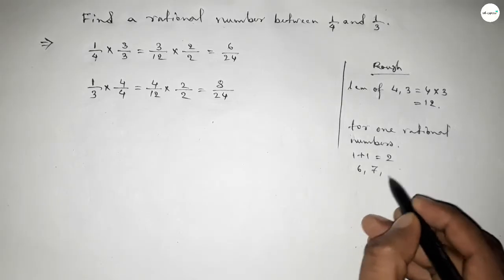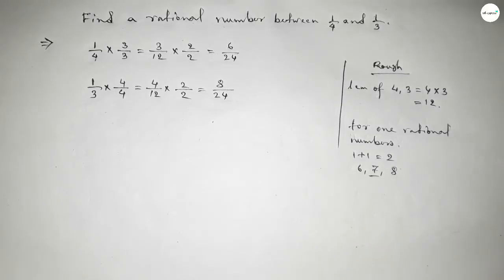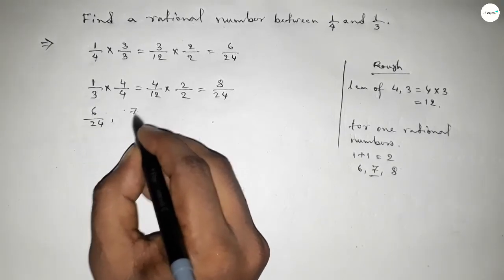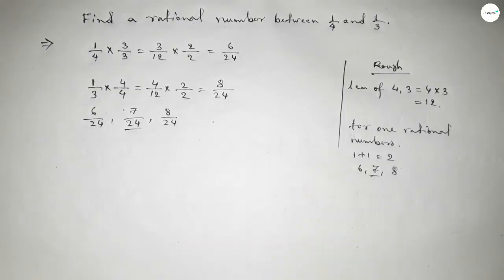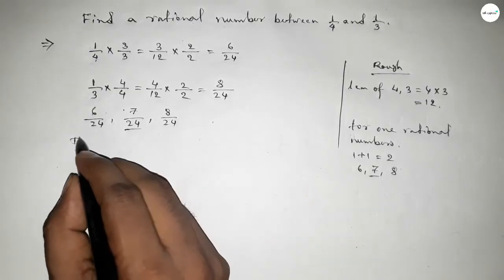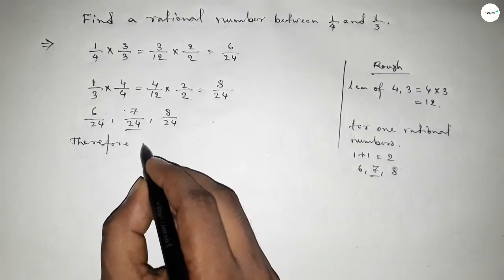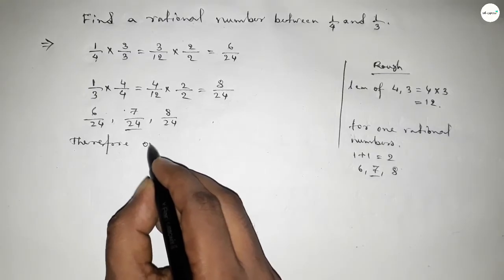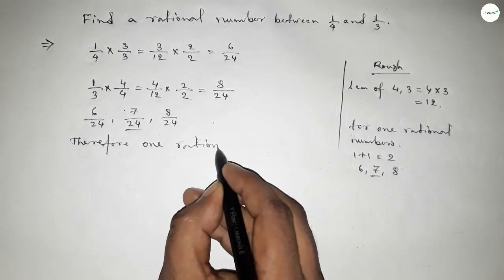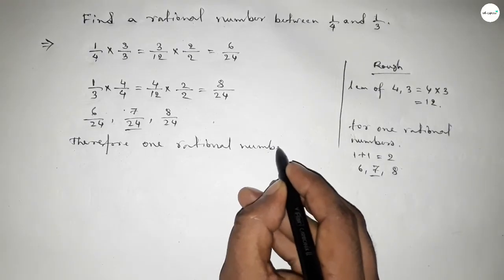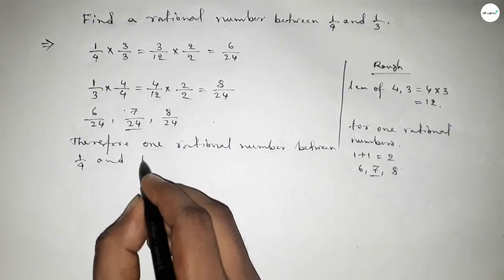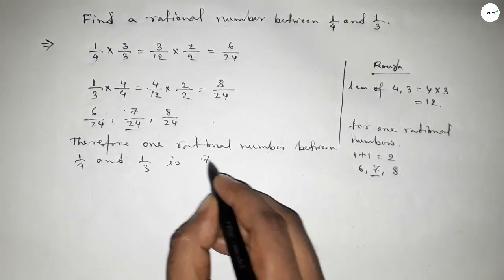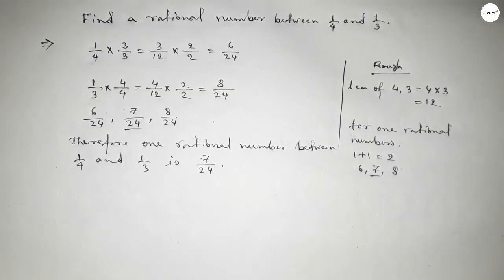So therefore, the rational number between 1 over 4 and 1 over 3 is 7 over 24. So this is the required rational number between 1 over 4 and 1 over 3.